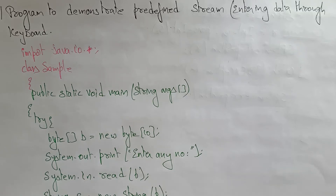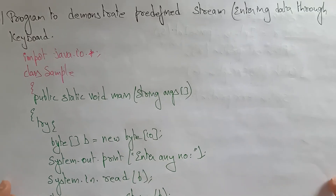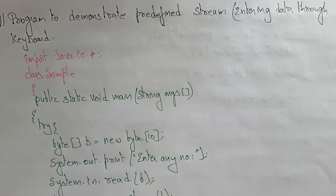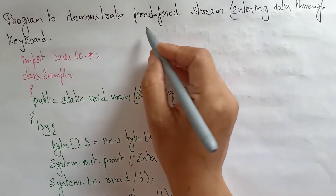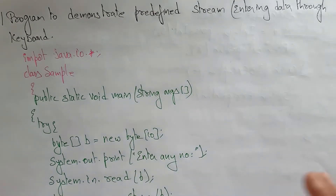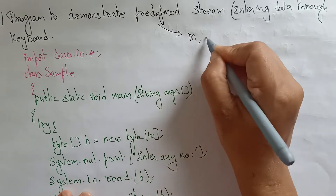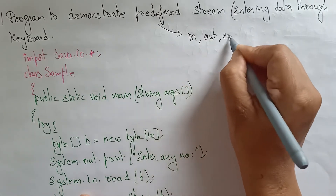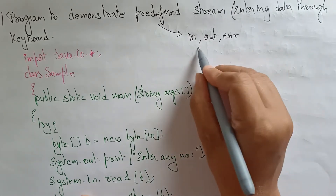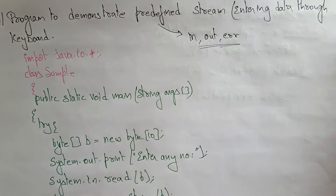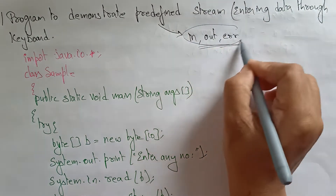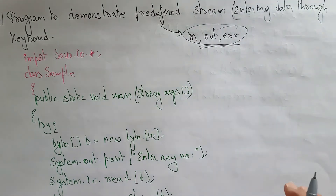Hi students, welcome back. Now coming to another program. Here I am explaining the program to demonstrate the predefined streams. So whatever predefined streams I explained in the previous video, I am going to explain in the program. Predefined streams are nothing but: in, out, error. These three are the predefined streams in Java programming language.